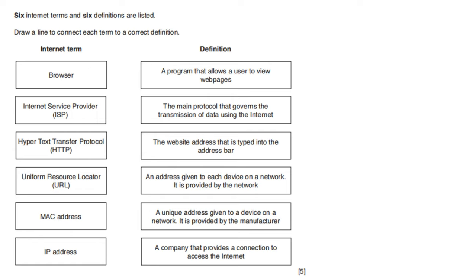Six internet terms and six definitions are listed — draw a line to connect each term to the correct definition. The program that allows a user to view web pages — web browser. The main protocol that governs the transmission of data using the internet — HTTP. The website address typed into the address bar — URL. An address given to each device on a network, provided by the network — IP address. A unique address given to a device, provided by the manufacturer — MAC address. A company that provides a connection to access the internet — ISP (internet service provider).